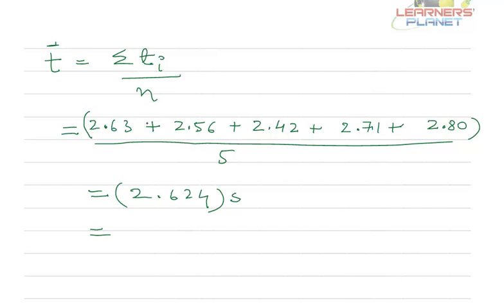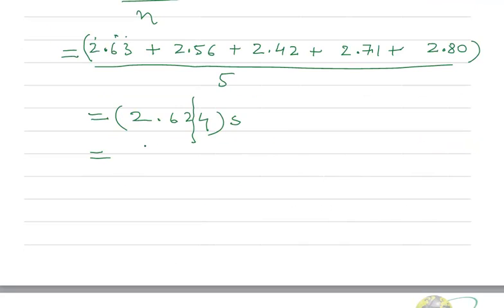But all these observations had only 3 significant figures, 1, 2 and 3. So, the resultant cannot have more than 3 significant figures. So, we have to cut off here. So, the answer will be 2.62 seconds. This is the mean value of the observations.